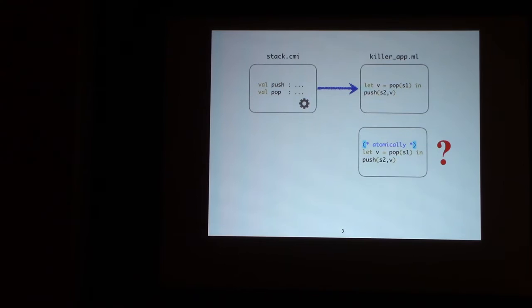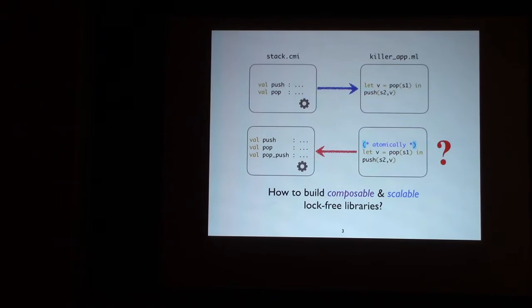He makes a lot of money, and then now he wants to improve the app. He wants to atomically pop from one stack and push into another. Since the library doesn't provide an abstraction to compose together these operations, he's basically stuck. He can ask the library developers to add an operation called pop push, which will do this operation atomically. But this isn't a scalable venture. Moreover, adding operations to lock-free concurrent programming libraries is difficult because you have to reason about the correctness of the new operation with respect to every other operation in the library that might race with it.